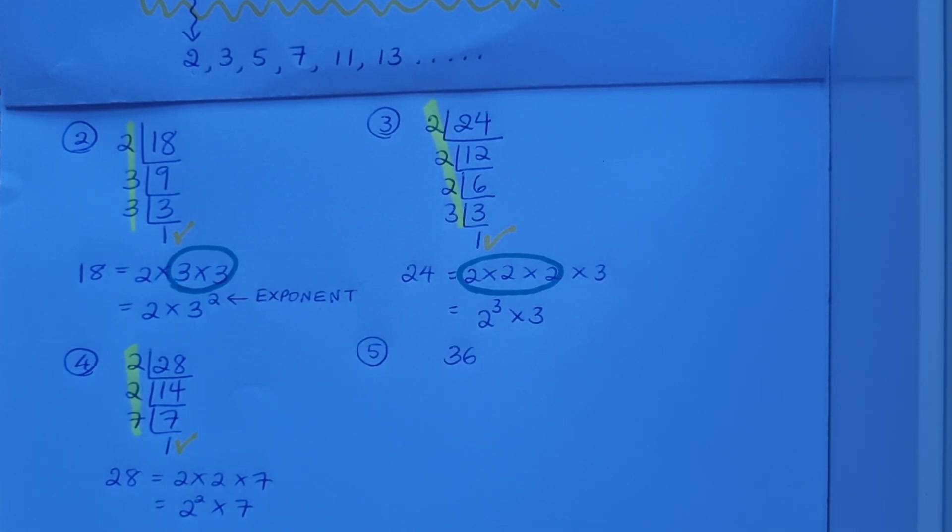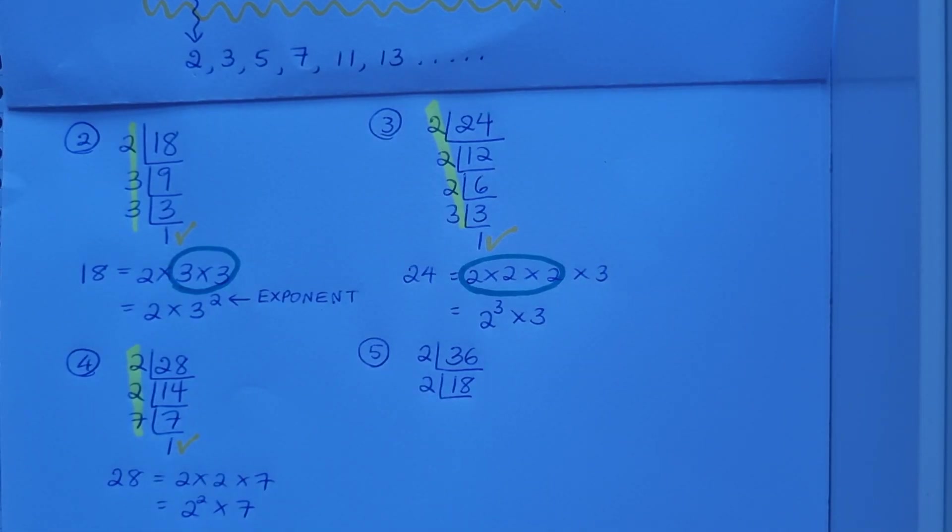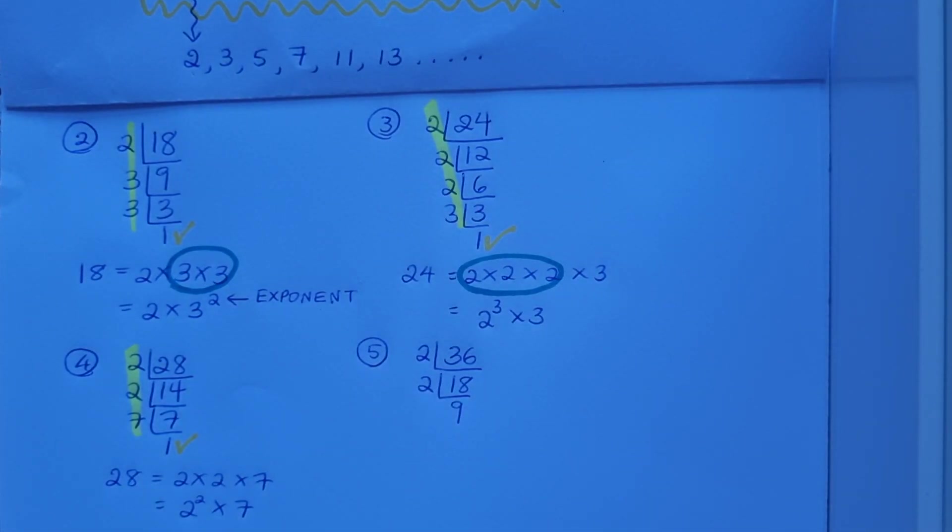One last question. What are the prime factors of 36? I can definitely divide by 2, that's going to go in 18 times. What will go into 18? 2 will go into 18, 9 times. What will go into 9? 3 will go in 3 times.